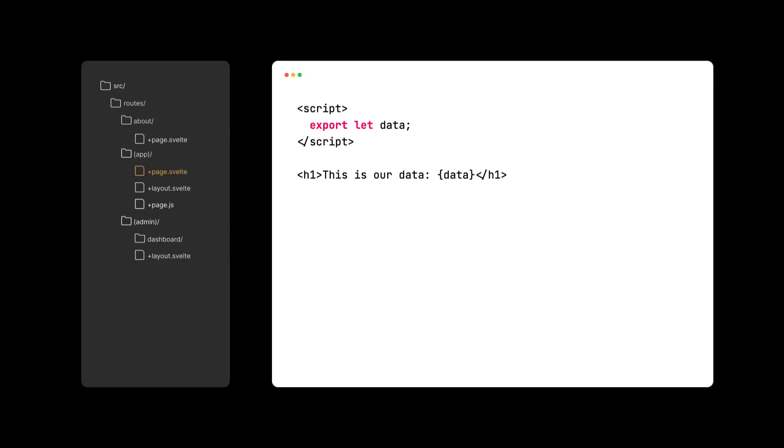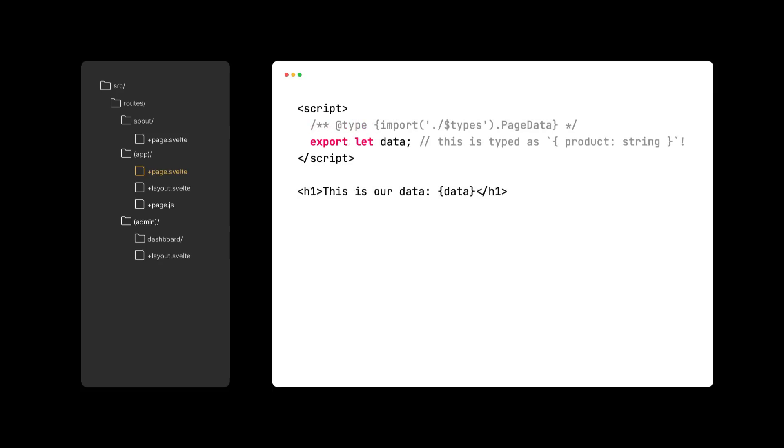As I mentioned earlier, data is strongly typed, so in this example data would be typed like this. These are just a few of the most recent changes made to SvelteKit. If you want a more complete list, I recommend checking out the migration guide, which I will link in the description below.